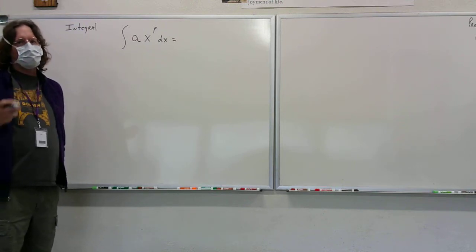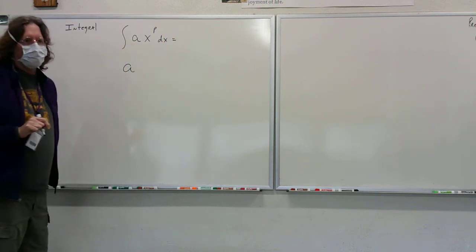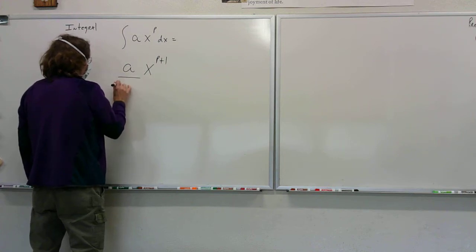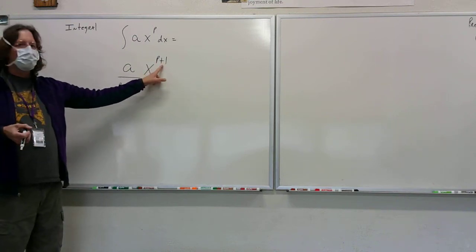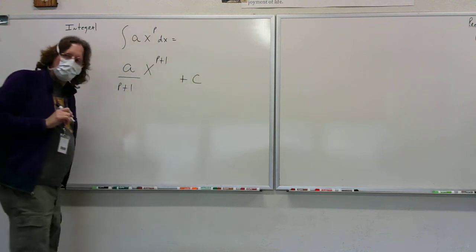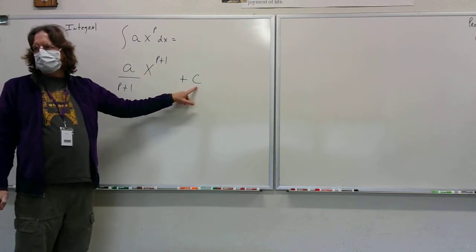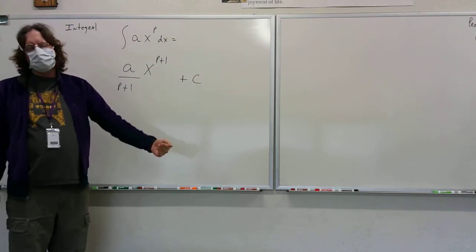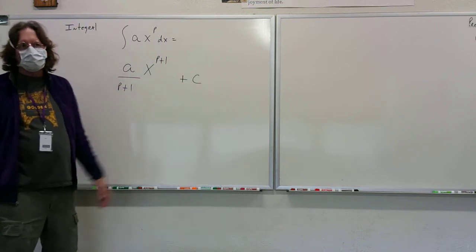The rule is simple: write down any constant that's out there, add 1 to the power, and then put the reciprocal out front. Because remember, when you took the derivative you subtracted 1 — so doing the opposite, you add 1. Then put a plus C. The C stands for any constant that could have been there; when you took the derivative, that constant became 0. So C represents the possibility that a constant existed.